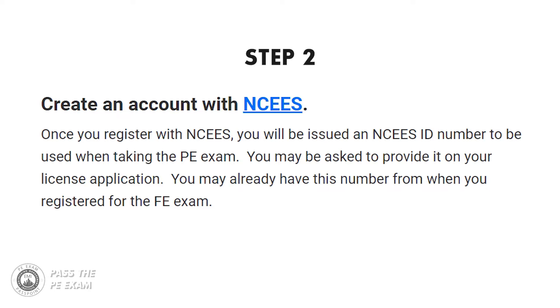Step two: create an account with NCEES. Once you register with NCEES, you will be issued an NCEES ID number to be used when taking the PE exam. You may be asked to provide it on your license application. You may have already received this number from when you registered for the FE exam. Be sure to keep this number in a safe place where you can easily find it when needed.